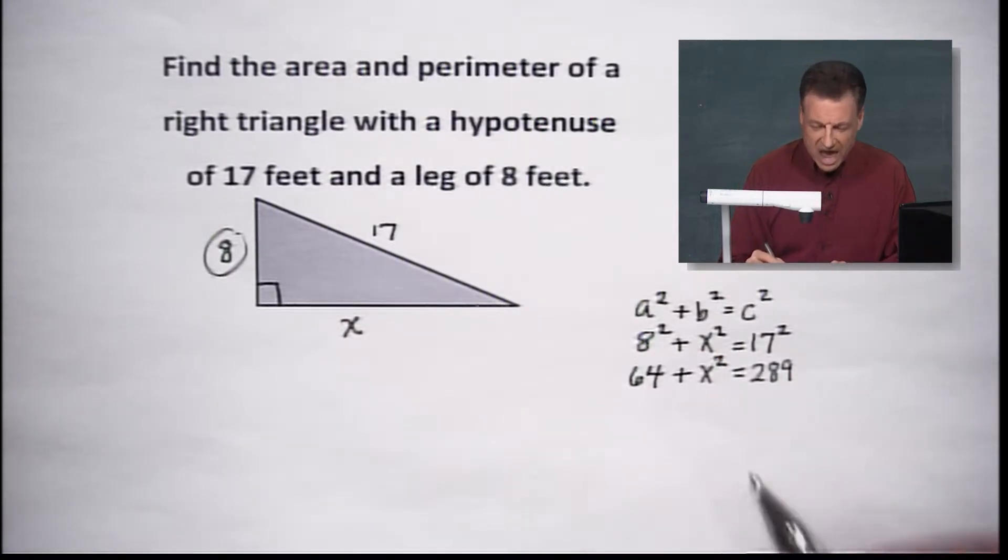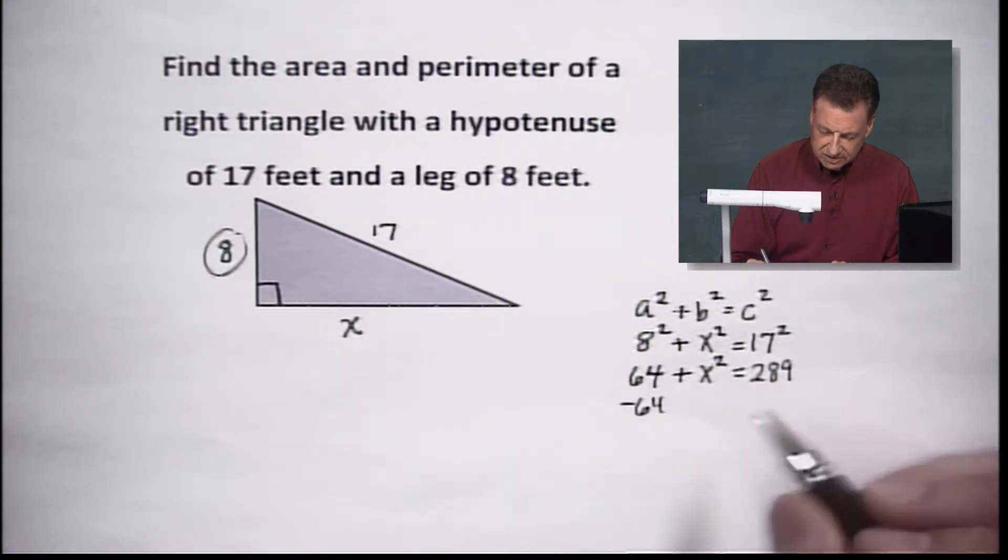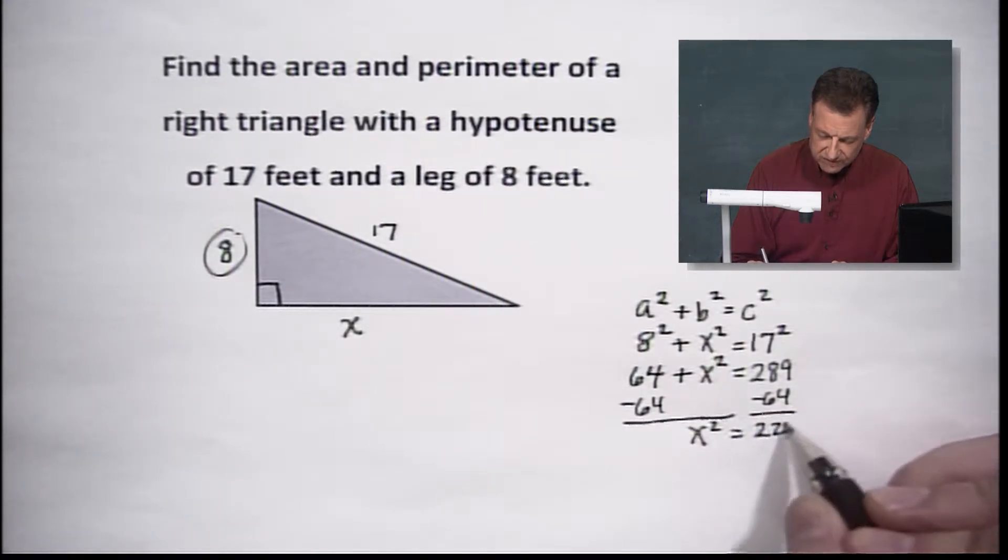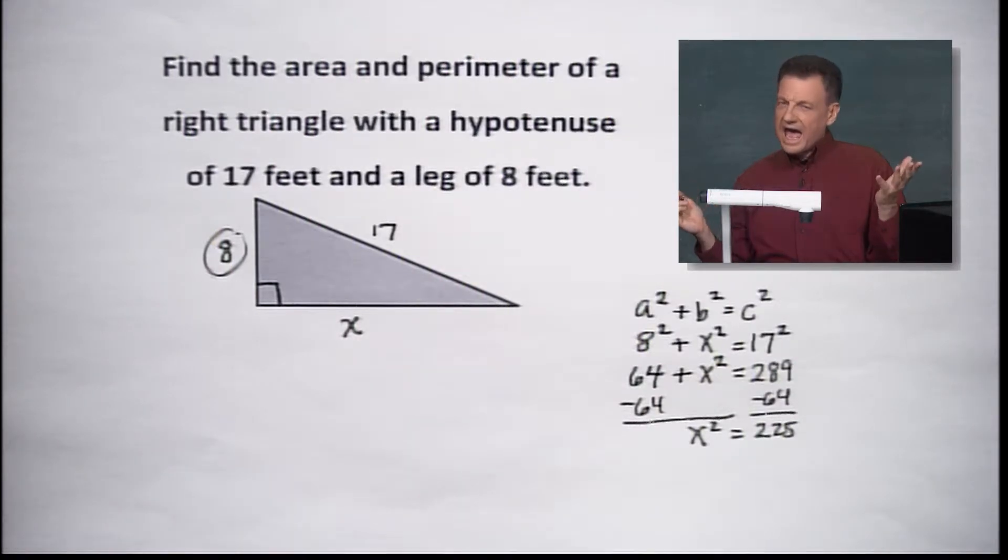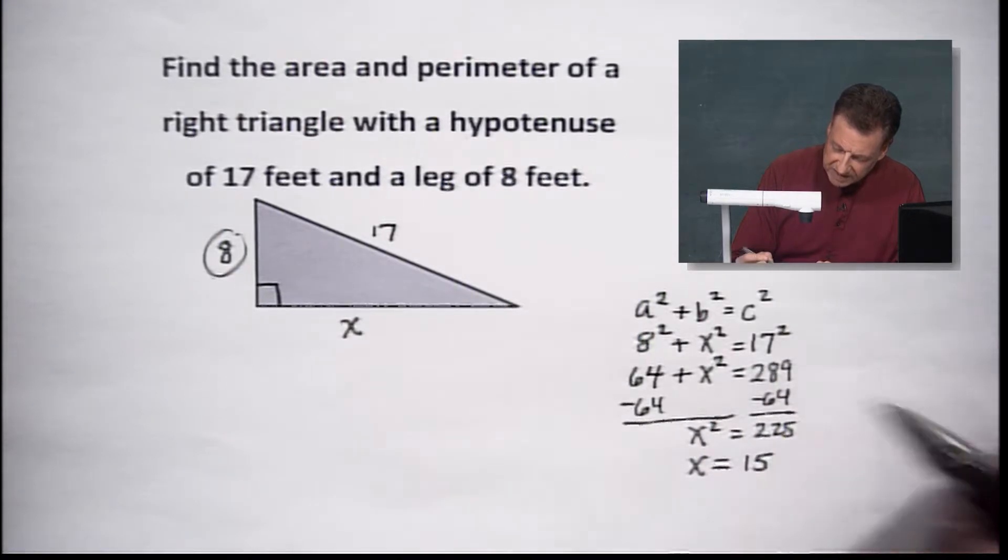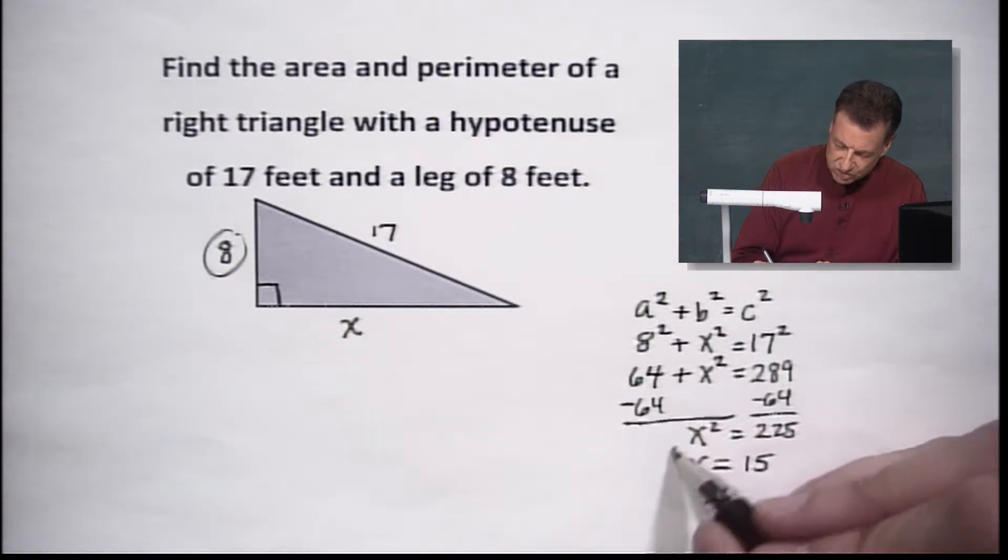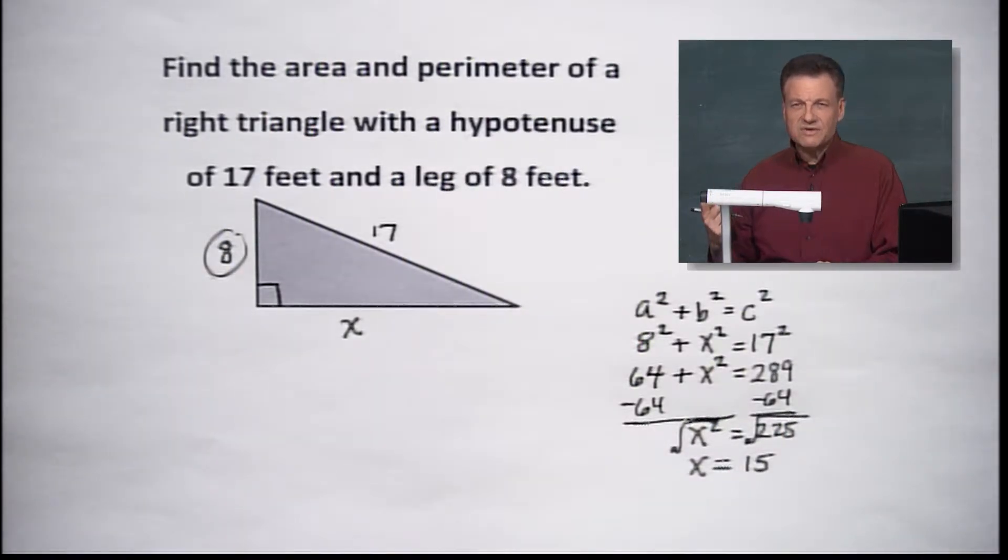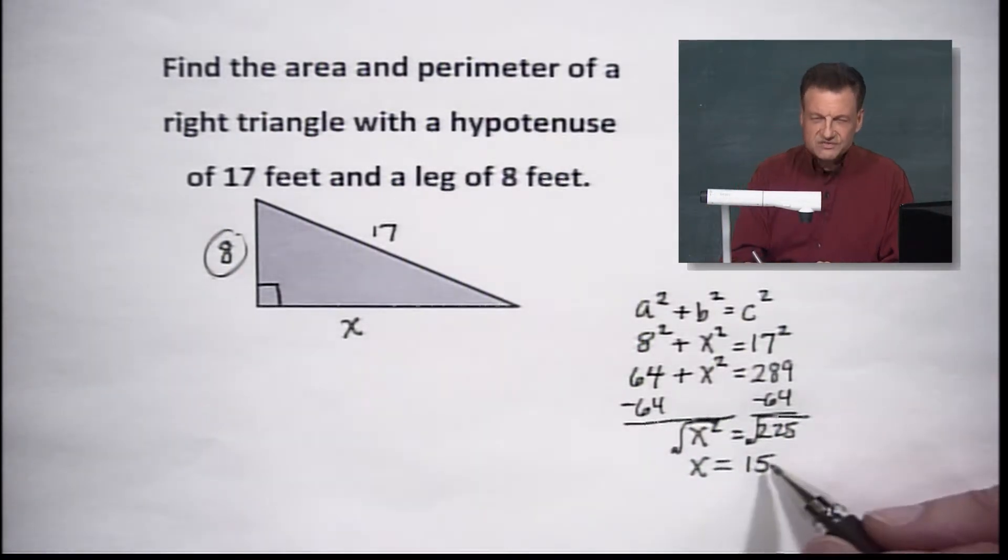Subtract 64 from both sides, and we are going to pick up X squared here, equaling, it looks like, 225. I'm not interested in X squared, though, am I? I want to know what X is. So X equals 15. How did I get that? Because I took the square root of both sides. I asked, what times itself will give us 225? Answer is 15.